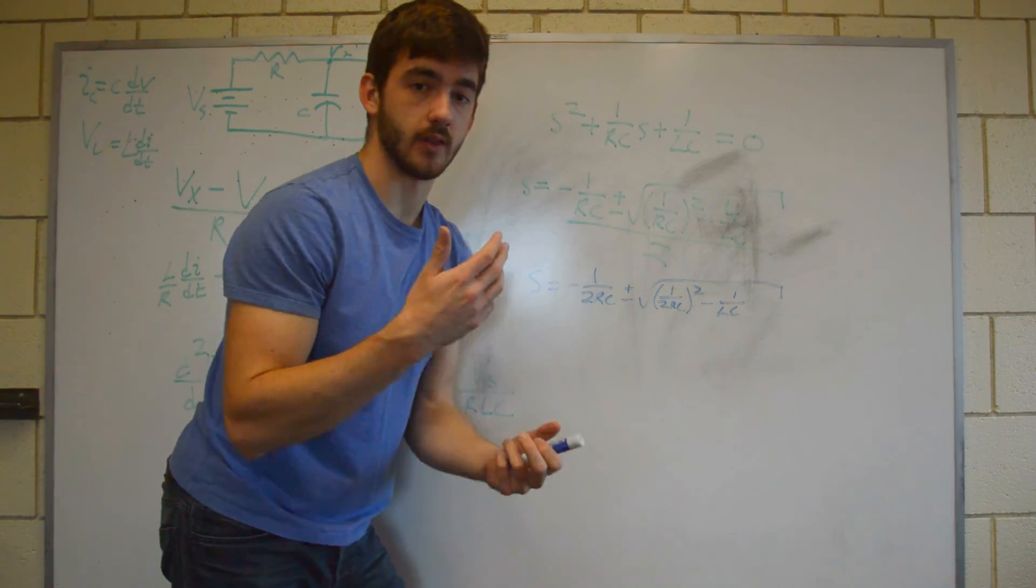If this square root, if the value inside the square root is less than 0, it's underdamped. If it equals 0, it's critically damped. And if it's greater than 0, it's overdamped. So let's figure that out. First, let's define a couple terms here. We know that alpha equals 1 over 2RC and omega 0 equals 1 over the square root of LC.